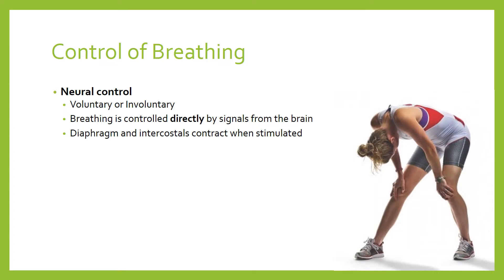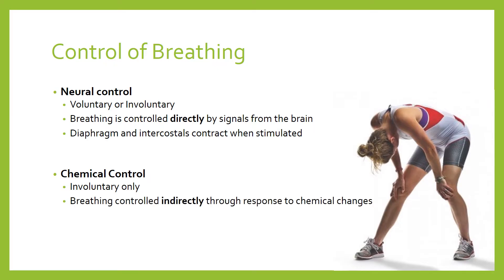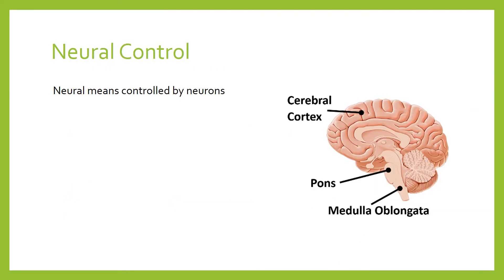The second kind of control of breathing is chemical control. There are chemical changes that happen in your bloodstream, particularly during exercise, and your body is constantly monitoring those chemicals to determine whether you need to speed up your breathing or whether it can stay at a resting rate. This process is involuntary — breathing is controlled indirectly through responses to different chemical changes in the blood.